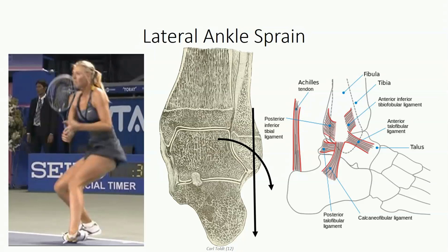Varying degrees of inversion sprain depend on injury severity. A grade one sprain involves micro-tearing within the anterior talofibular ligament and often the calcaneofibular ligament as well, resulting in pain and immediate swelling but no joint instability — the individual can usually walk with some point tenderness for days or weeks. Second-degree tears involve partial thickness tears within the anterior talofibular ligament and sometimes the calcaneofibular ligament, resulting in more severe pain and significant difficulty walking, though partial ligament integrity means no dramatic loss of stability.